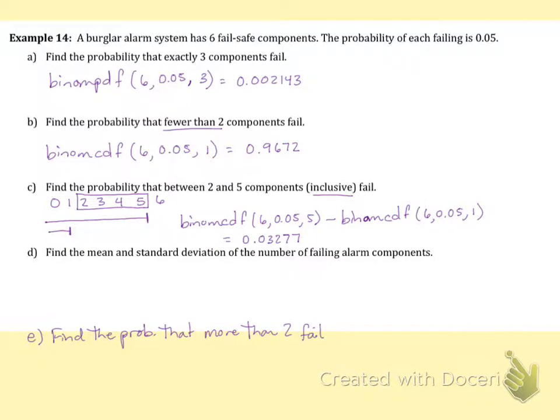So I'm going to write out the outcomes again. More than two means that three, four, five, or six of them fail. But the binomial CDF command goes with the value or fewer. So I want to use the complement. And I'm going to start with one, and we're going to subtract off the probability that we get two or fewer.